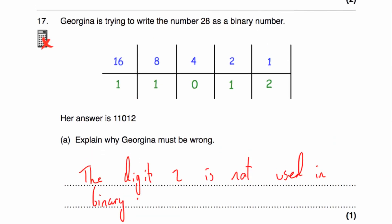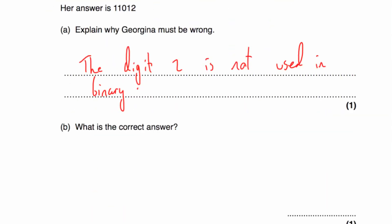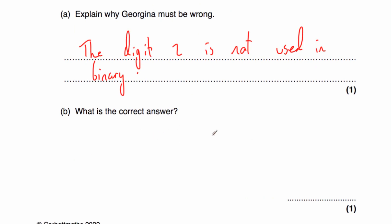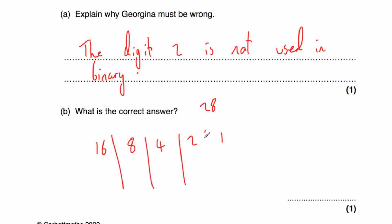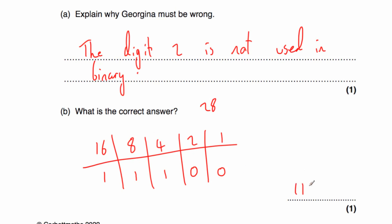Part B asks for the correct answer. We're writing 28 as a binary number. Columns: 1, 2, 4, 8, 16. We don't need 32. We'd use 16, then add 8 — that's 24. Then add 4 — that's 28. We don't need any 2s or 1s. So 28 in binary is 11100, using 16 plus 8 plus 4 equals 28.